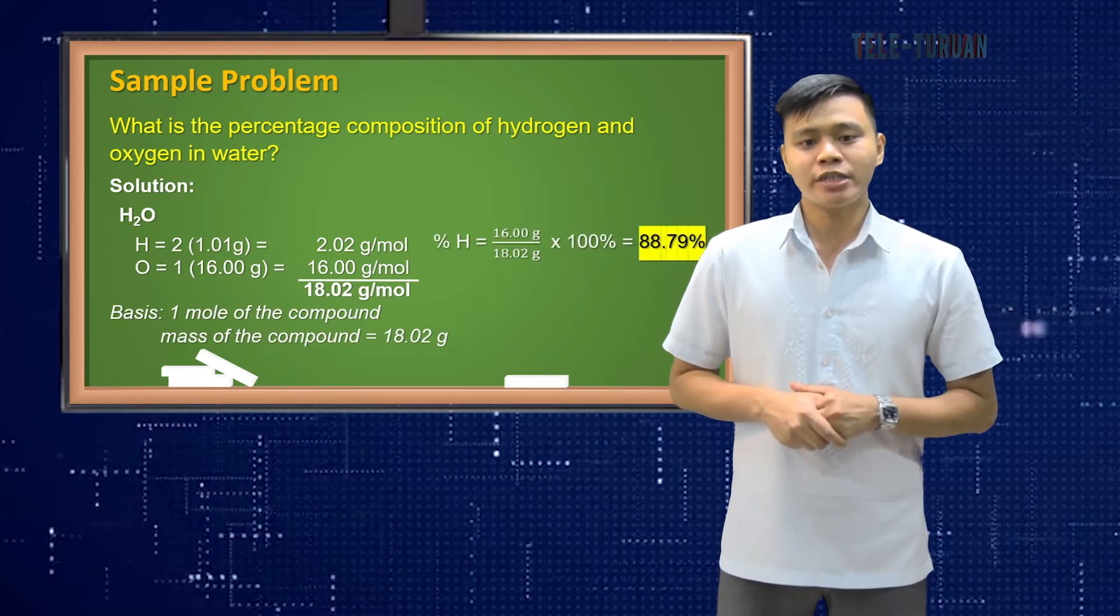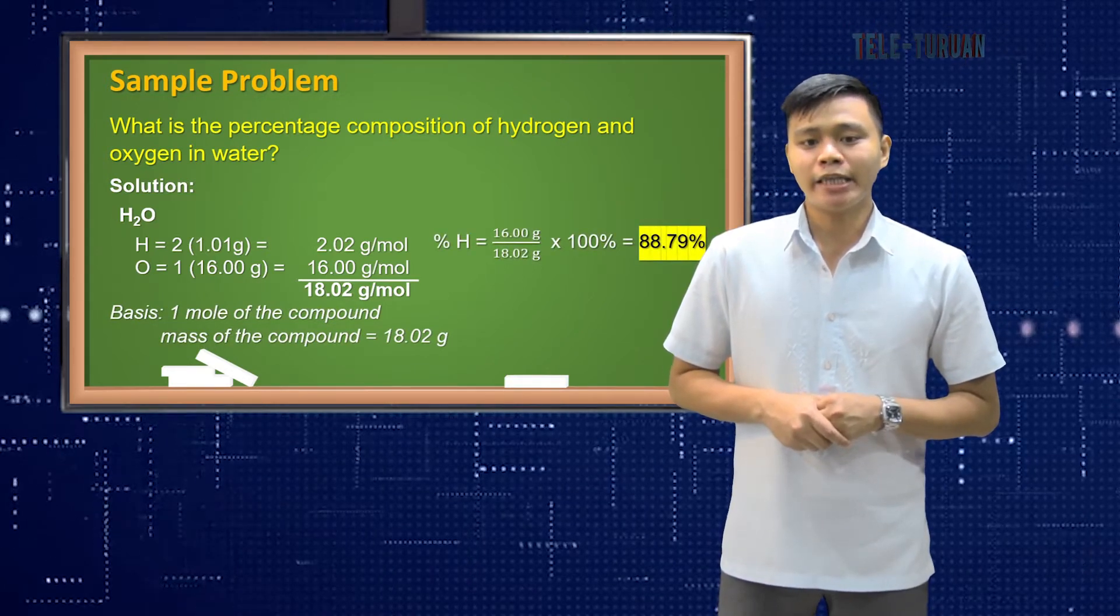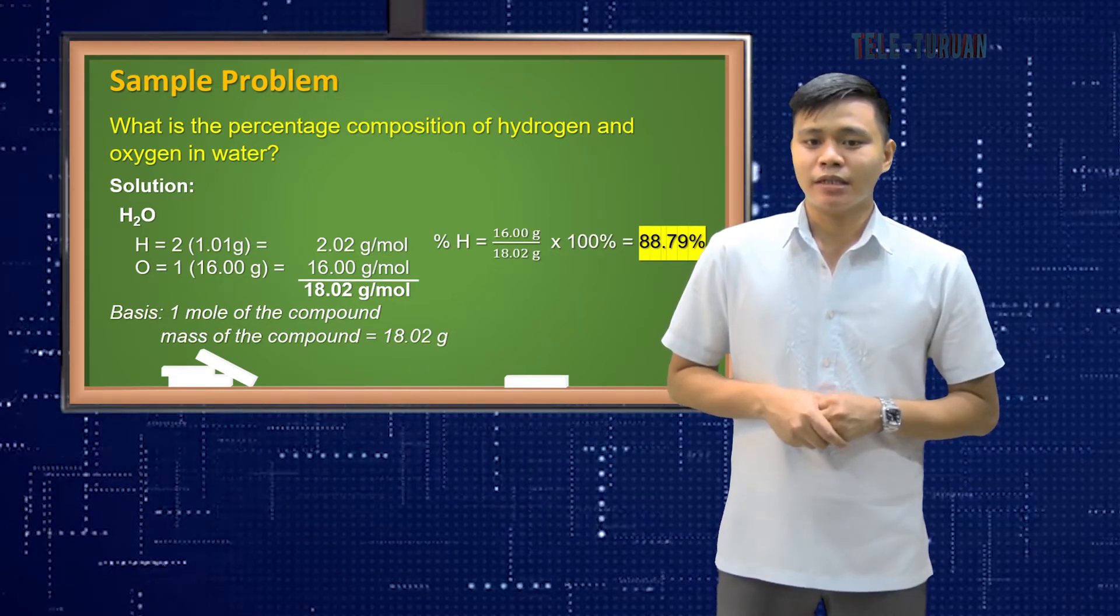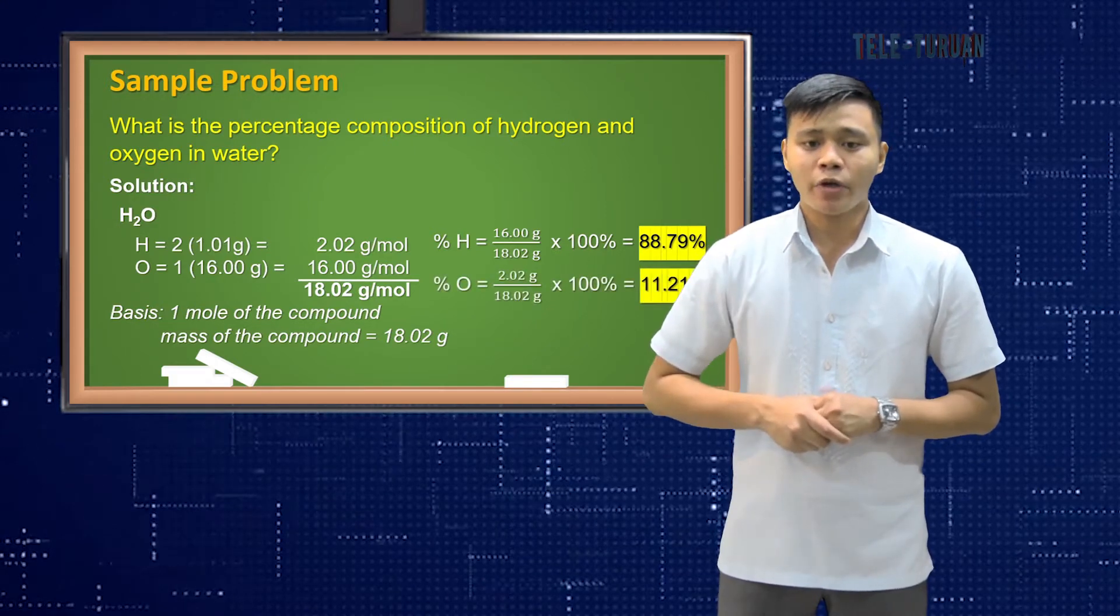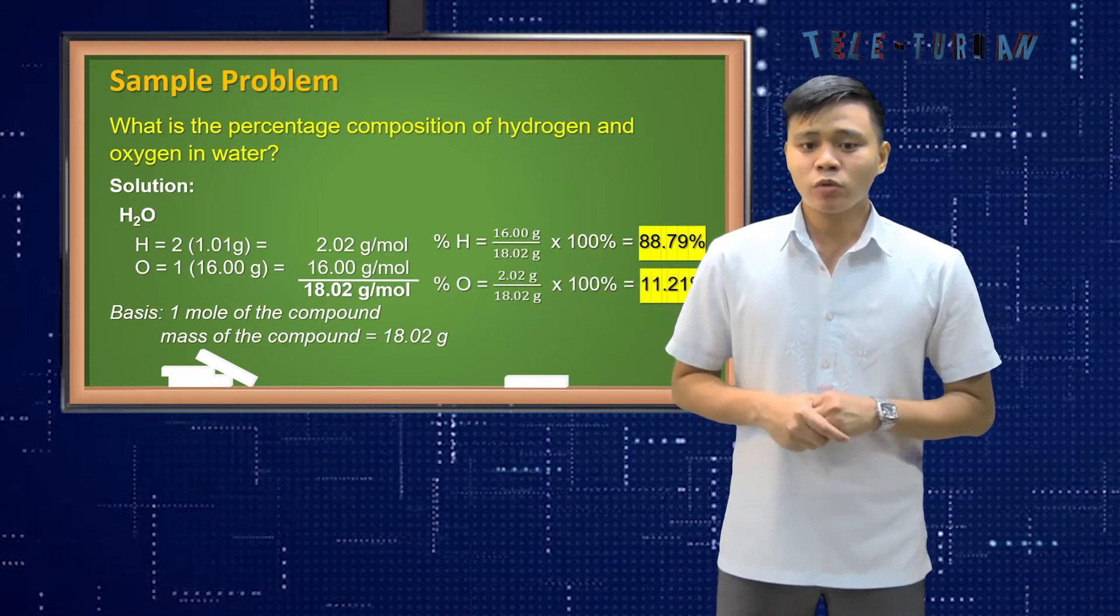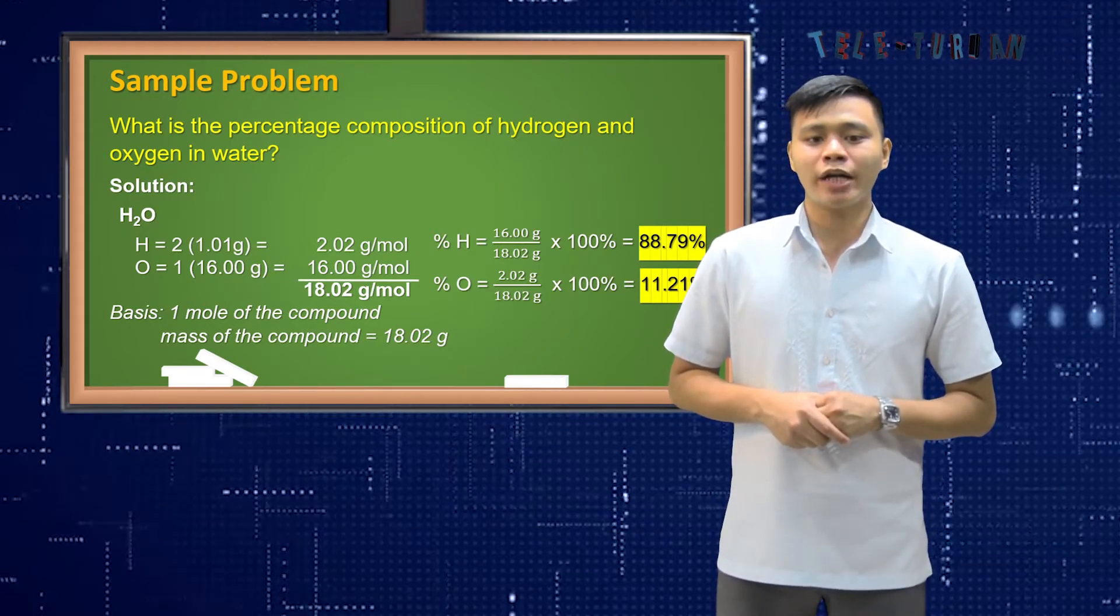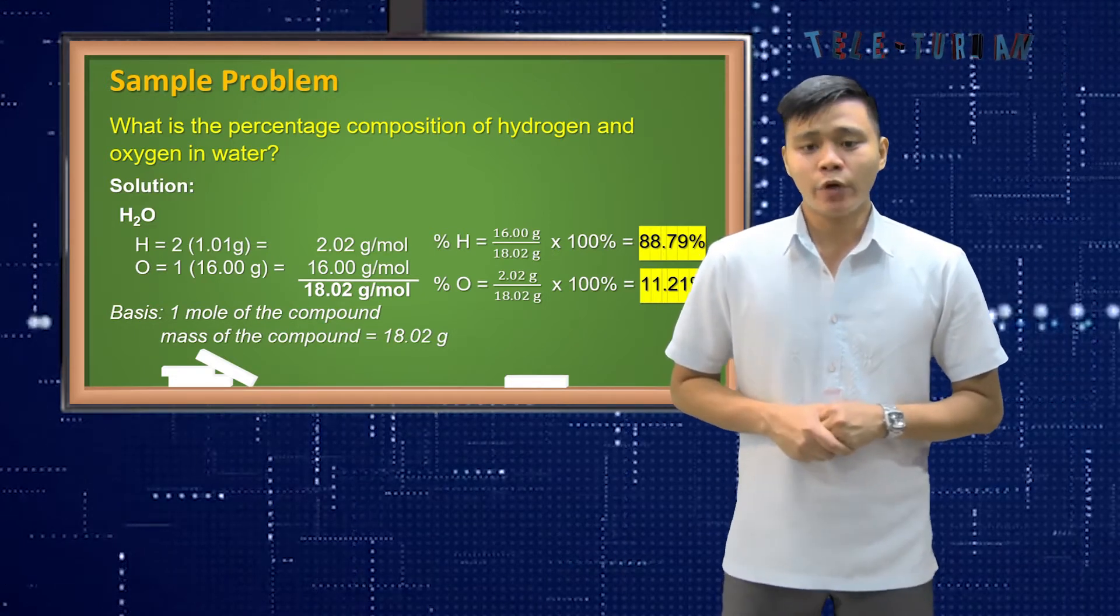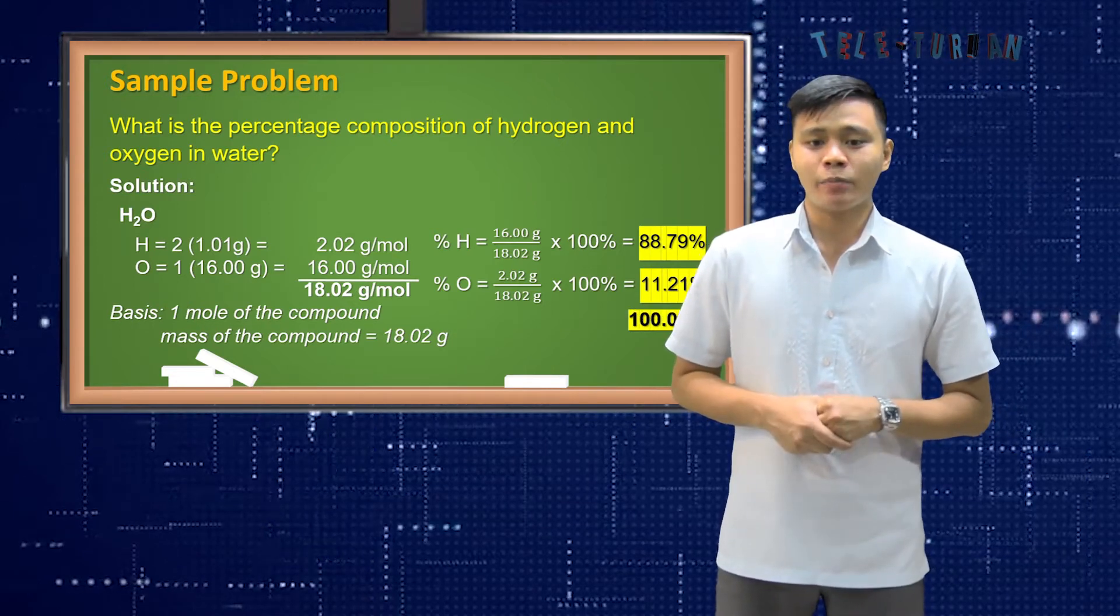Percent hydrogen is equal to 2.02 grams divided by 18.02 grams times 100 percent is equal to 11.21 percent. And for our percent oxygen, it is equal to 16.00 grams divided by 18.02 grams times 100 percent, which is equal to 88.79 percent. Adding it all, it will be 100 percent.